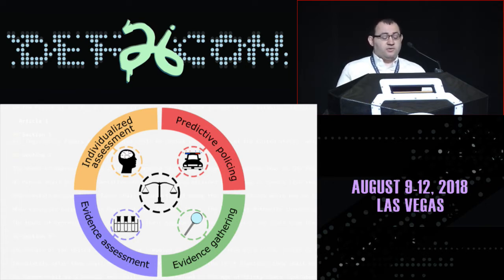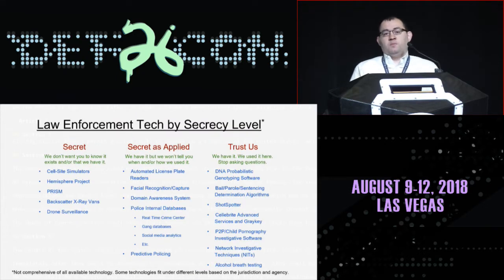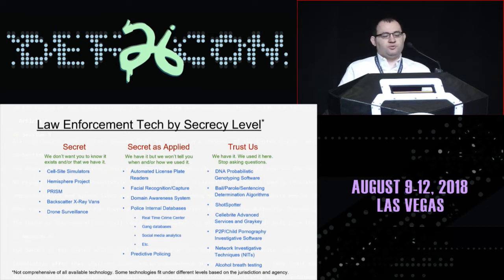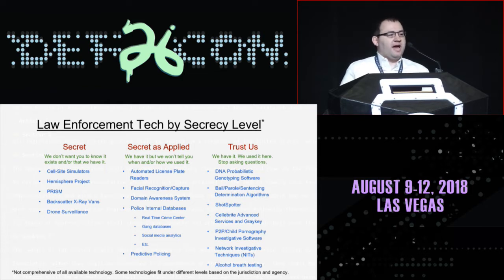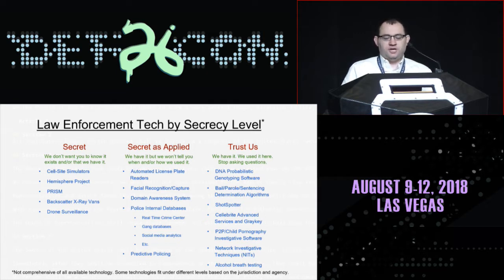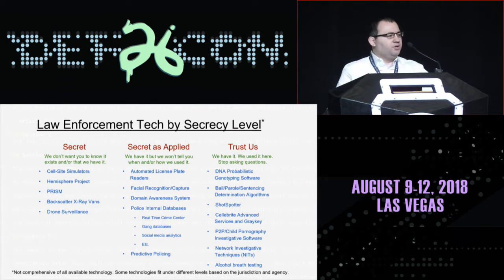The evidence-gathering and evidence assessment categories often bleed into each other. I've broken down a lot of the technology based on three different secrecy levels. There's 'secret' — we don't want you to know this exists, and if you find out it exists, we don't want you to know that we have it. Then there's 'secret as applied' — we have it, but we don't want to tell you when or how we're using it. And then there's the 'trust us' category — okay, we have it, yeah we used it in this case, but don't look at the man behind the curtain. Stop asking questions. Just trust us. It works exactly like we say it does.